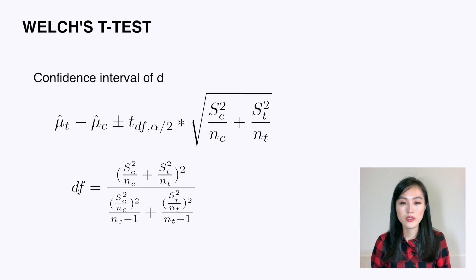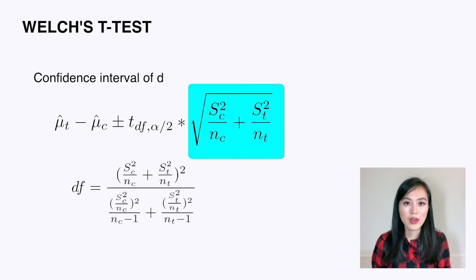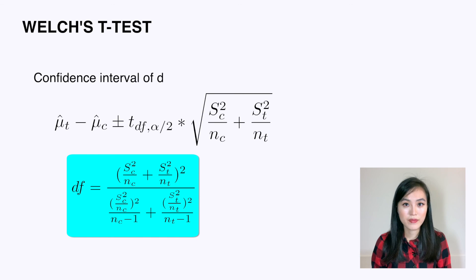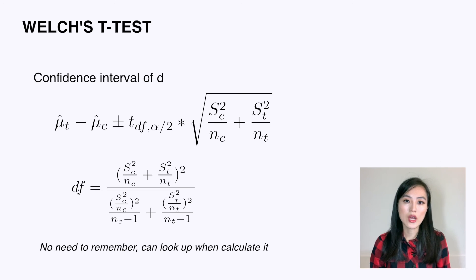The confidence interval of the estimation can then be obtained using this formula. Compared to the pooled variance case, two things differ: the standard error and the degrees of freedom. The rest is the same. The degrees of freedom formula is a bit complicated and you don't need to memorize it — you only need to know that Welch's t-test is used for such cases, and you can always look up the formula for the calculation.